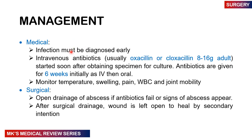What's the management of acute osteomyelitis? The infection must be diagnosed early. Intravenous antibiotics — usually oxacillin or cloxacillin, 8 to 16 grams in adults — are started soon after obtaining specific specimen cultures. Antibiotics are given for six weeks, initially as IV then transitioning to oral. Monitor temperature, swelling, pain, white blood cell count, and joint mobility.